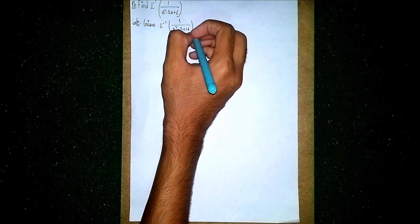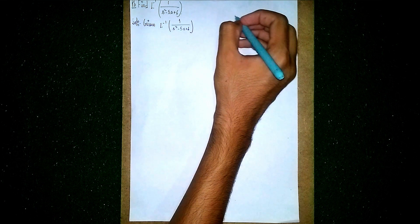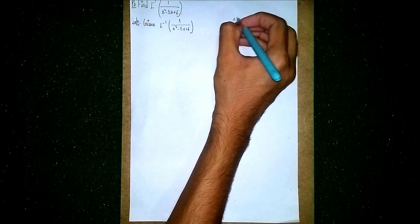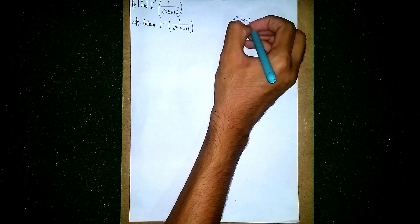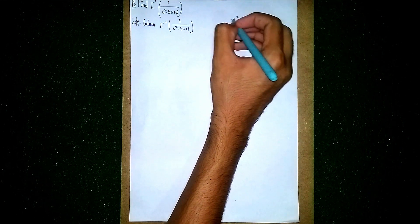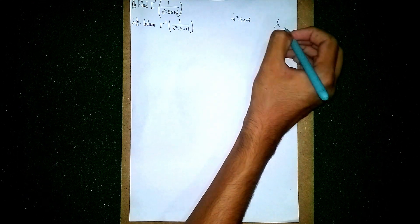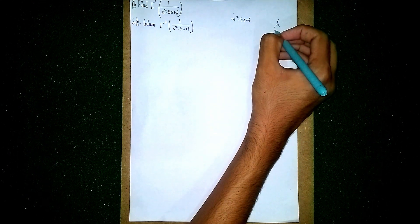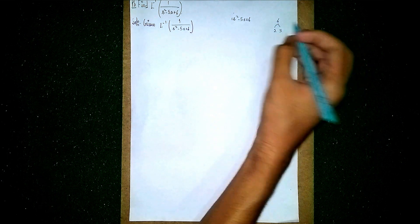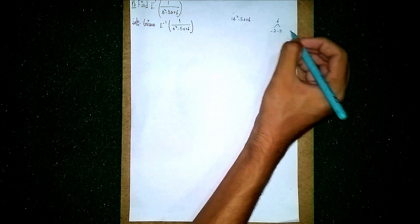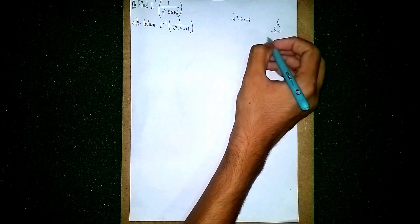As you can see, this is given in quadratic form, so you have to find the factors. For s-squared minus 5s plus 6, we want the factors of 6. Now 1 into 6 is 6, so the factors of 6 are 2 and 3. We have to take minus and minus here.